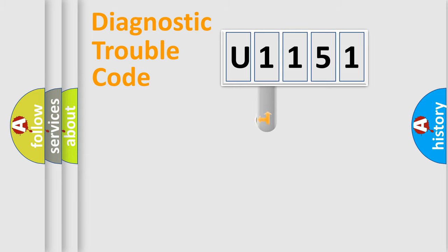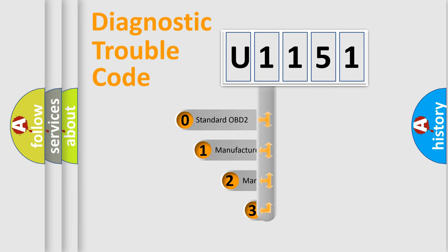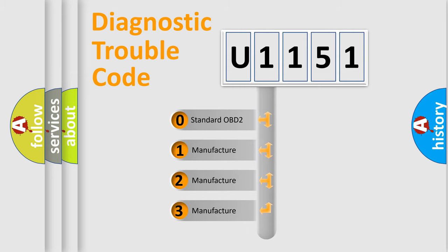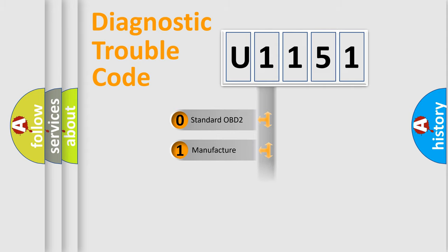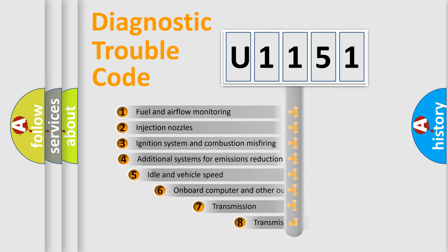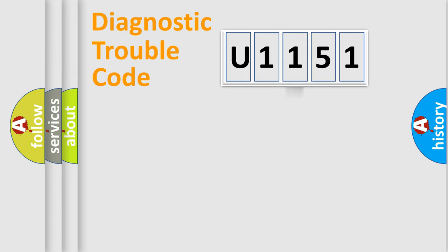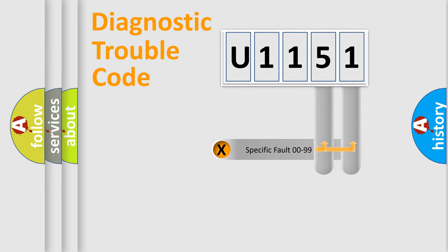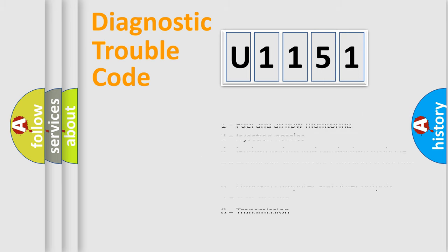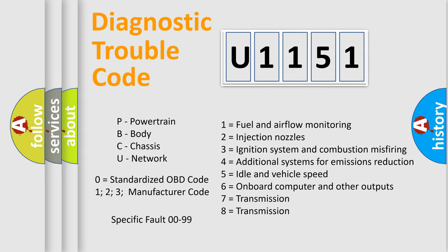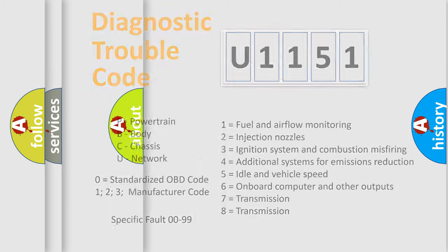This distribution is defined in the first character of the code. If the second character is expressed as zero, it is a standardized error. In the case of numbers 1, 2, or 3, it is a manufacturer-specific error. The third character specifies a subset of errors, and this distribution is valid only for the standardized DTC code. Only the last two characters define the specific fault of the group.